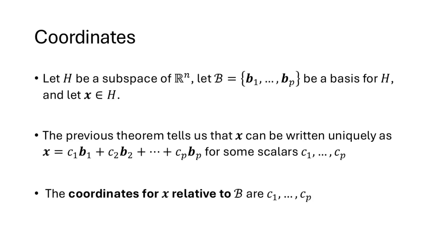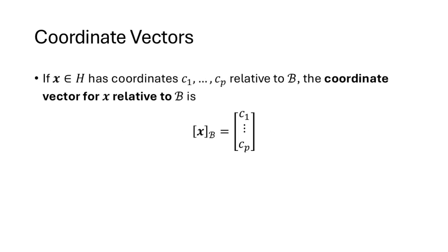Remember our definition: when we write x as a linear combination of the b vectors, the weights are the coordinates of x relative to basis B. Sometimes it's convenient to write those coordinates as a single vector. The notation x in brackets with subscript B is the vector containing the c coordinates. Notice that the coordinate vector has p entries, even though x itself has n entries — the number of entries in the coordinate vector equals the size of the basis.